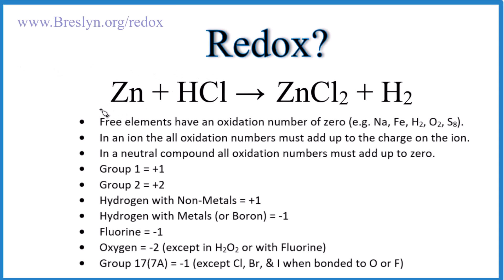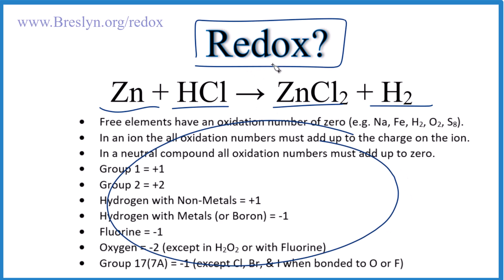So here's how you can tell whether Zn plus HCl yields ZnCl2 plus H2, whether this is a redox reaction. We use these rules here to assign oxidation numbers to the equation, and we can tell if we have a redox reaction. Let's give it a try.